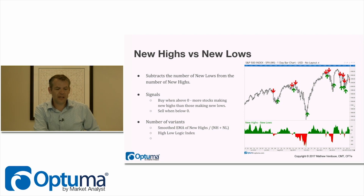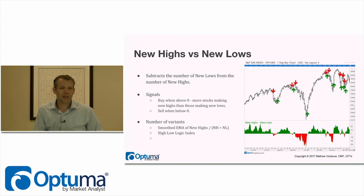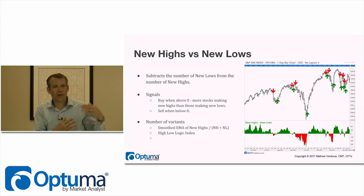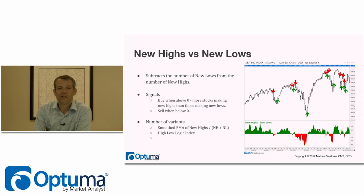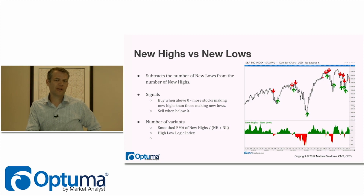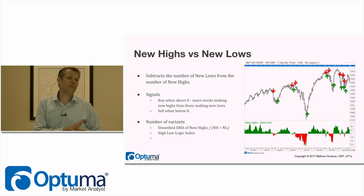Moving to new highs and new lows — a very important tool. We're looking at how many stocks are near their all-time highs or yearly highs, and different variants use different look-back periods. We want to buy when the measure is above zero because more stocks are making new highs, and sell when it's below zero. You can see the signals automatically marked — it's especially fast to respond at bottoms, and the market then makes new highs coming out of those levels.